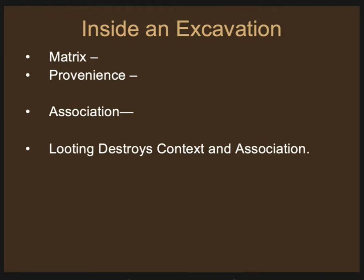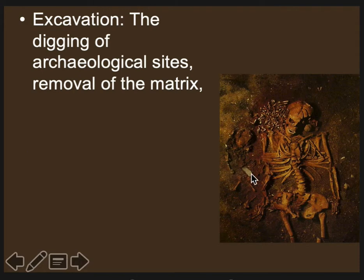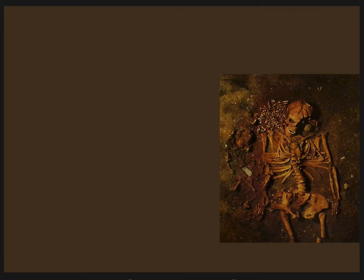Your interpretation of an artifact will change depending on what kind of context you find it in. A stone tool found in a burial gives you one meaning. A stone tool found with animal bones gives you a different context and a different meaning. A stone tool found with other stone tools gives you a completely different context altogether. In the first scenario, it's a grave good. In the second scenario, with animal bones, it's a butchery tool. And in the third scenario, that context might be a production area where they produced stone tools.